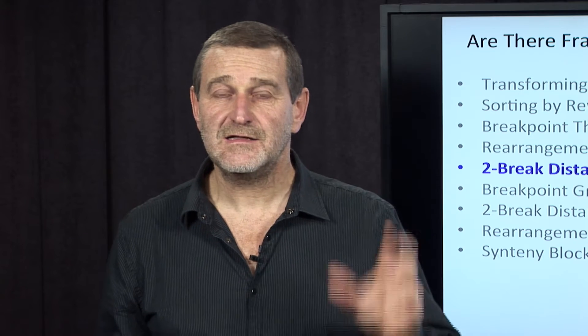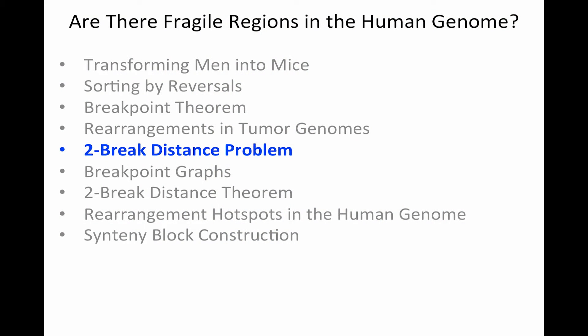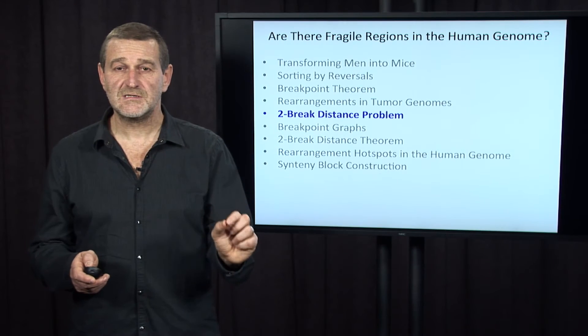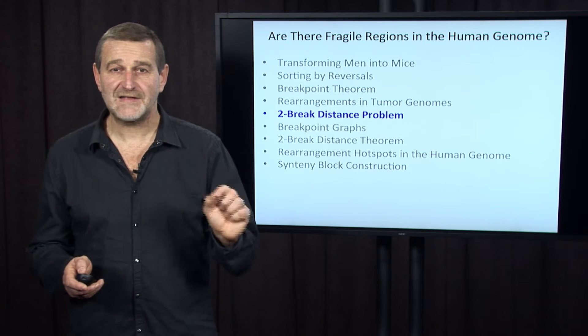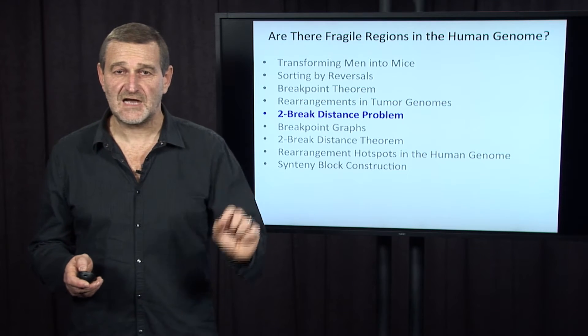Remember, analyzing rearrangements in linear chromosomes is extremely difficult, even if we deal with a unichromosomal genome. Analyzing rearrangements in multichromosomal linear genomes becomes nearly impossible. And surprisingly enough, analyzing rearrangements in multichromosomal genomes with cyclic chromosomes will turn out quite simple. We are about to discover it.